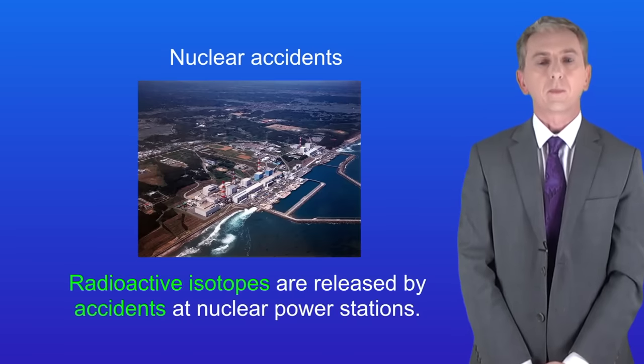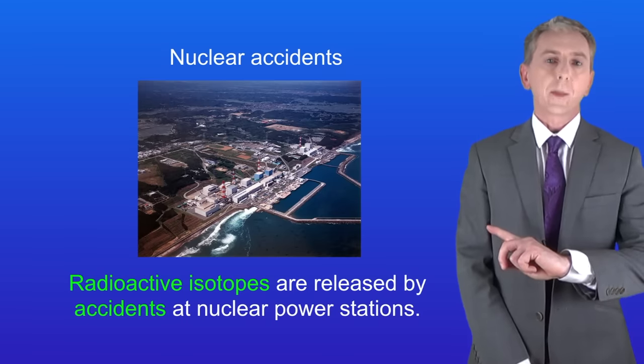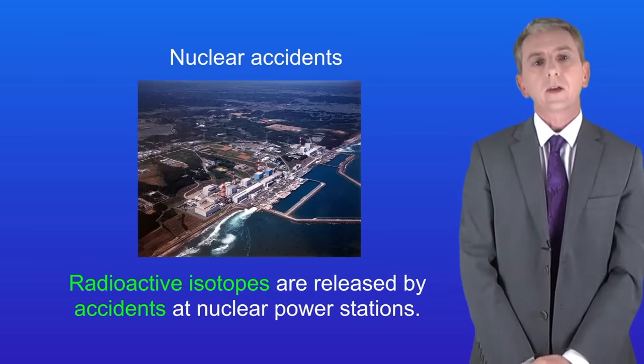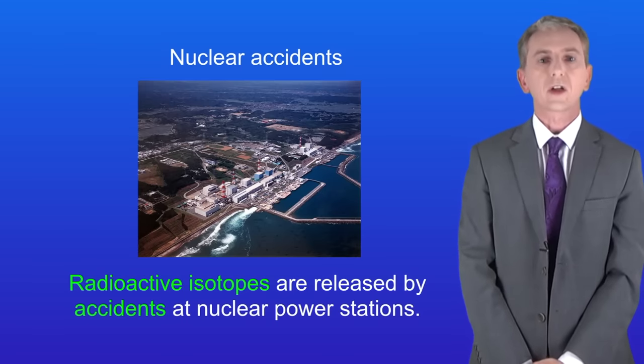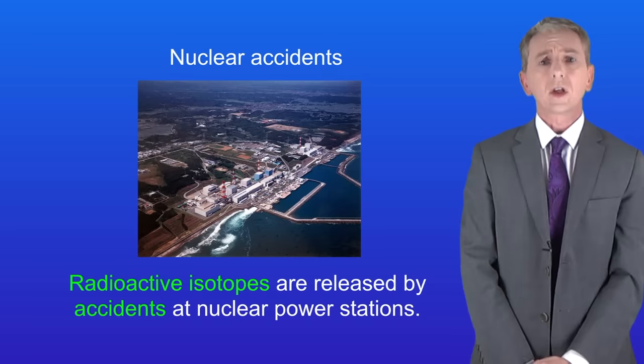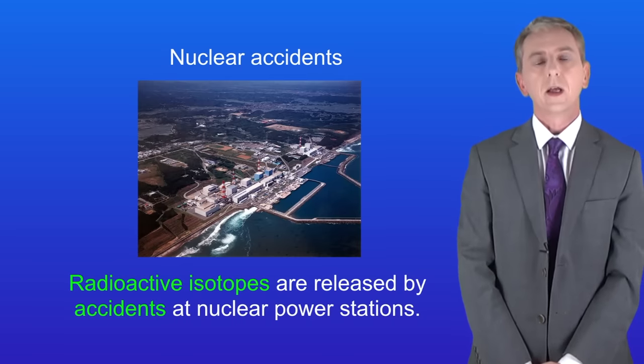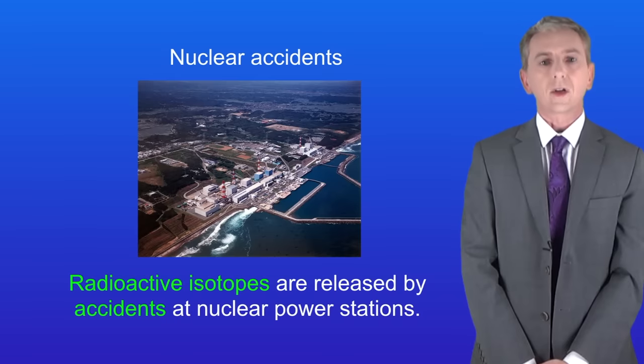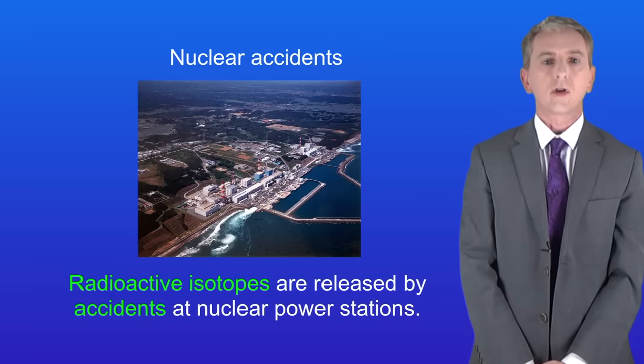The second man-made source of background radiation are nuclear accidents. This shows a nuclear power station in Japan. In 2011 a tsunami crashed into the power station causing it to release huge amounts of radioactive isotopes into the environment. Now this will take decades to clean up. So nuclear accidents are a man-made source of background radiation.